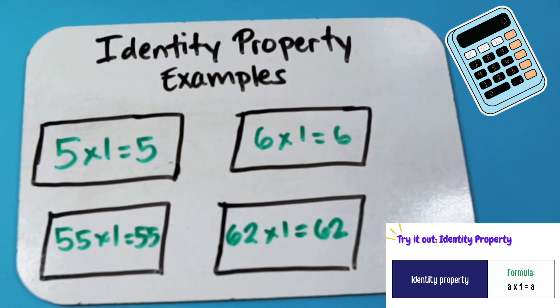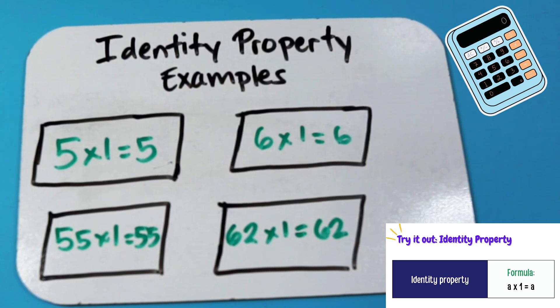Feel free to try this at home. Plug in any number you like for a, and you will see that that number times one will be equal to the number itself. So that is identity property for multiplication.